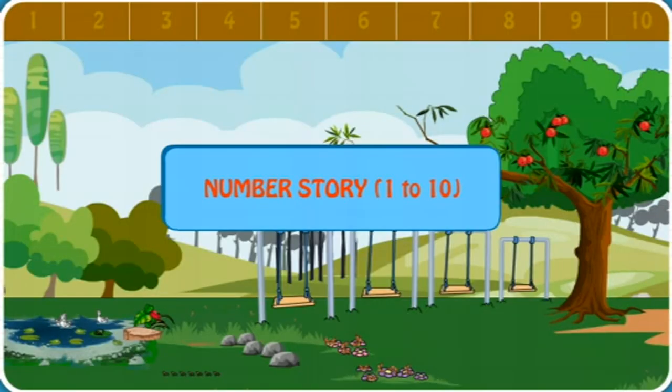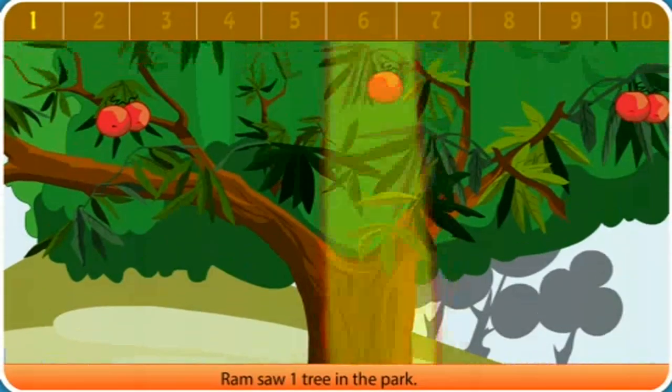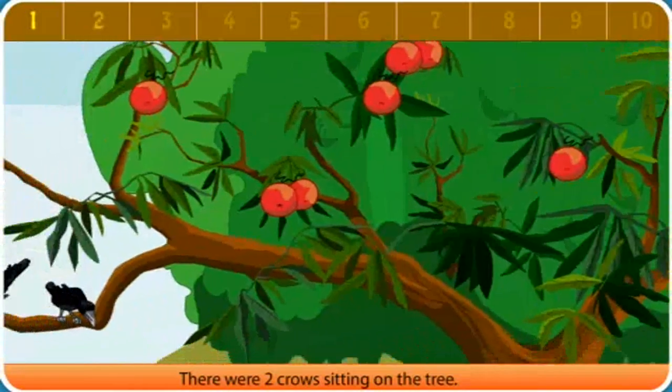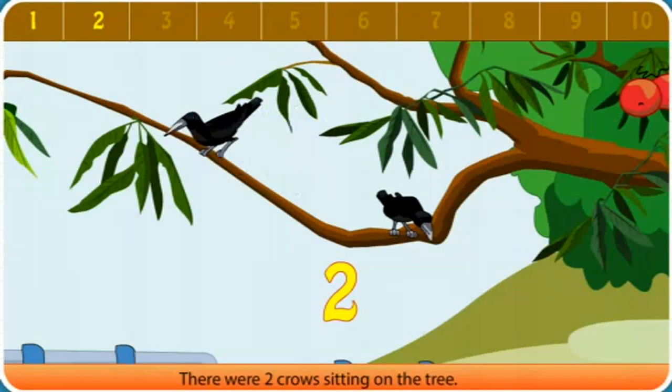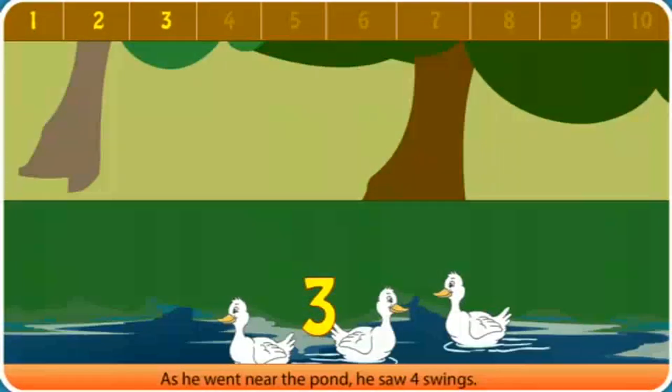Number Story 1-10. Ram saw one tree in the park. There were two crows sitting on the tree. Three ducks were swimming in the pond.